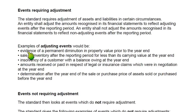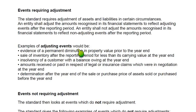Adjusting event examples: evidence of a permanent diminution in property value prior to year end — for instance, if we have a plot that was park-facing and the park was converted into a dumping site, resulting in a permanent reduction in value. This is an adjusting event, so the loss should be booked immediately in the current year without waiting for next year.